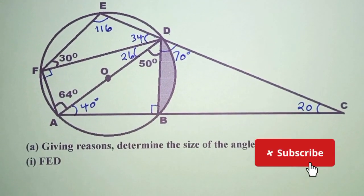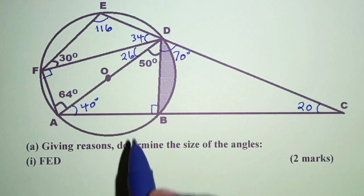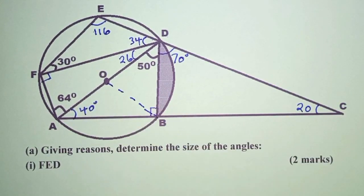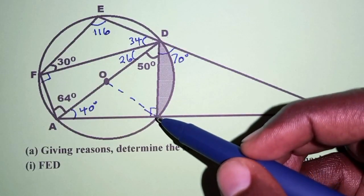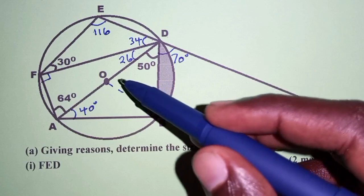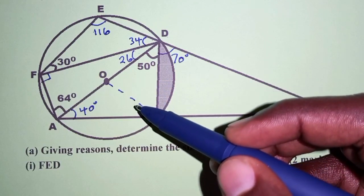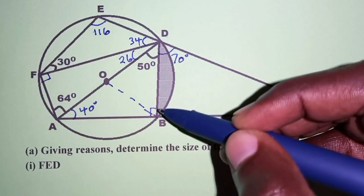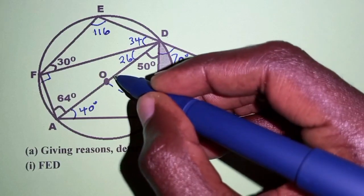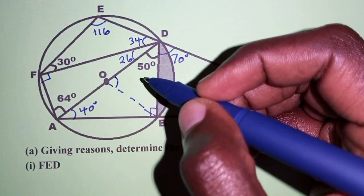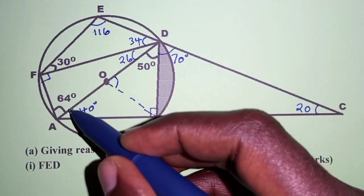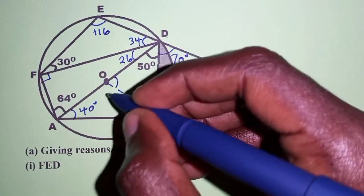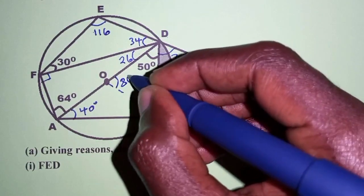Let's introduce the radius at that point. The angle subtended at the center of a circle by a chord is always twice the angle subtended at the circumference by the same chord. Chord BD subtends an angle at the center. If at the circumference we have 40 degrees, then at the center we have twice 40, which is 80 degrees.